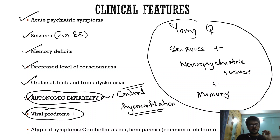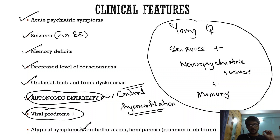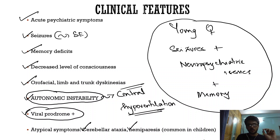Most patients will have a viral prodrome before they develop the neuropsychiatric features and seizures. Atypical symptoms include cerebellar ataxia and motor weakness in the form of hemiparesis. Remember that atypical features are more common in the pediatric age group.